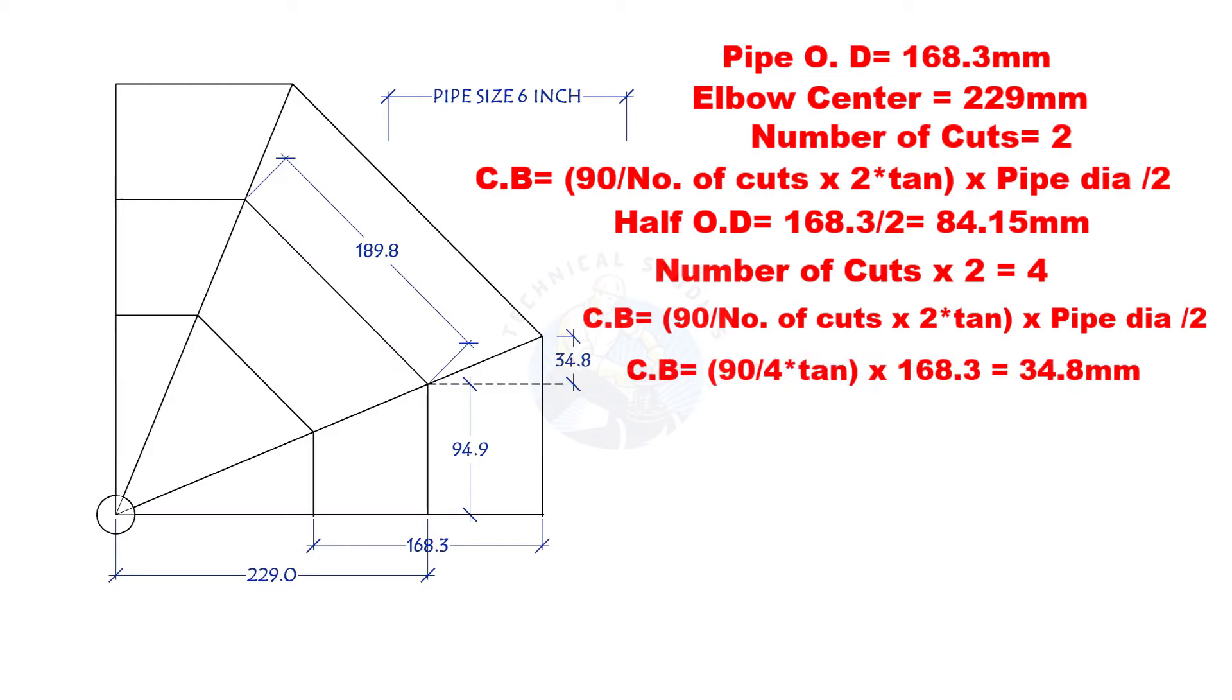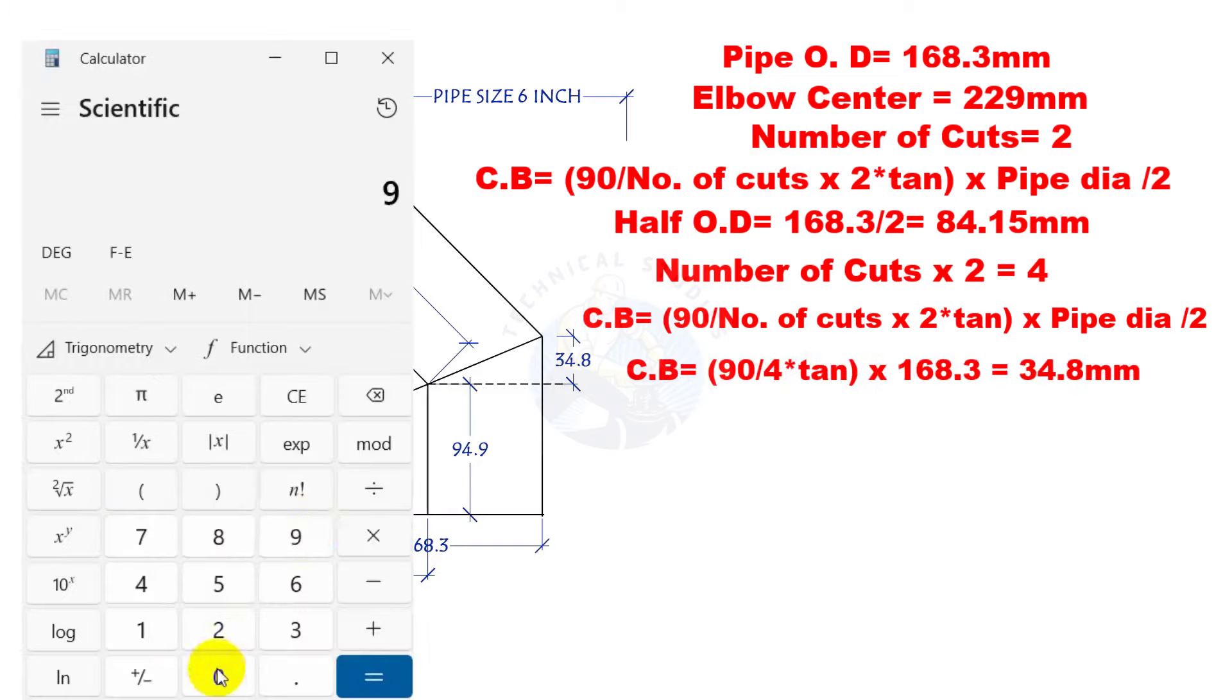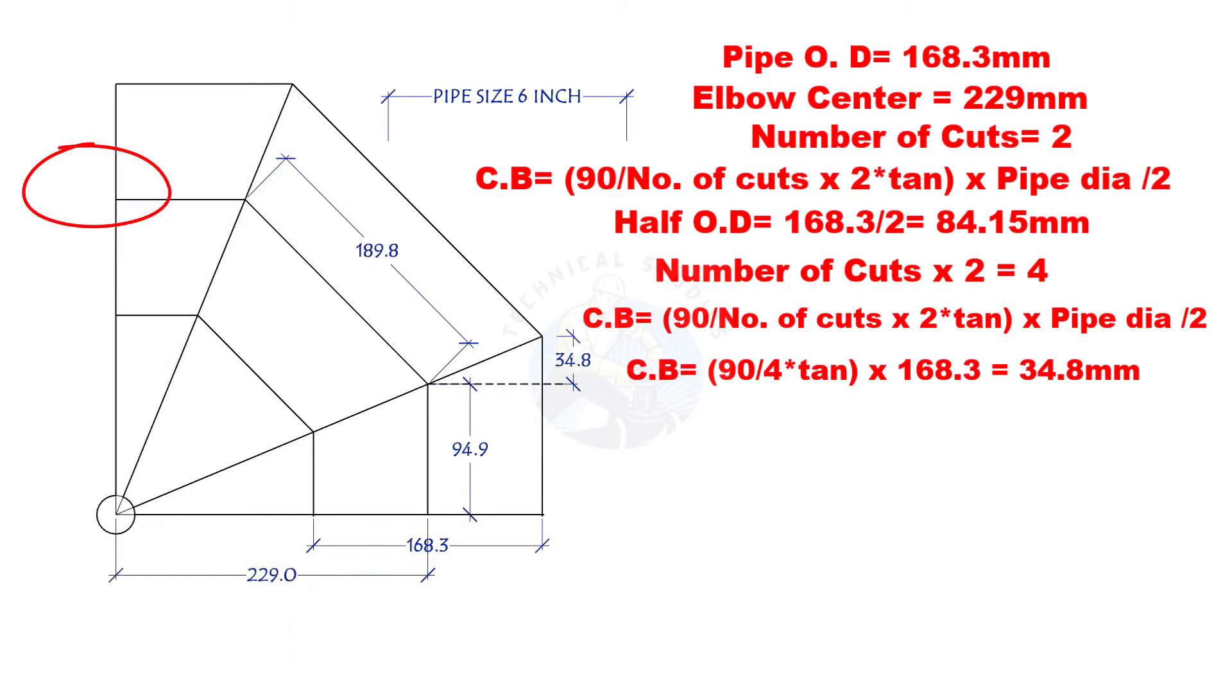Let us apply the formula. So, the cutback is 34.8 mm. You can cross-check this answer in another method or check on a layout.